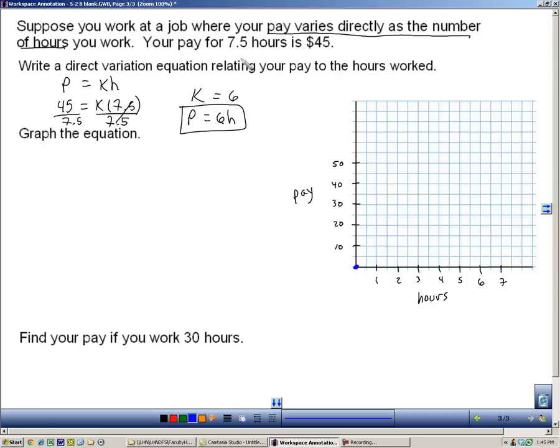So here are my labels for hours and for pay. And the point that I'm going to use comes from right here. 7.5 hours is $45. So here's 7.5, and that goes up to $45. So there's my second point. One point is through the origin. Here's the other point. I can now graph my line. So there's the graph of p equals 6h.